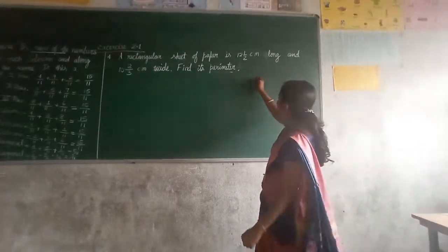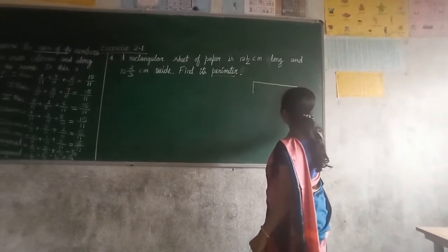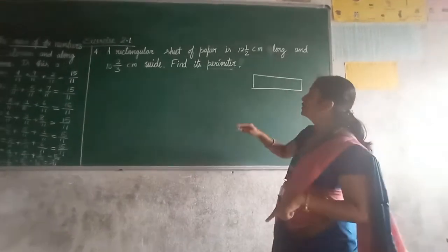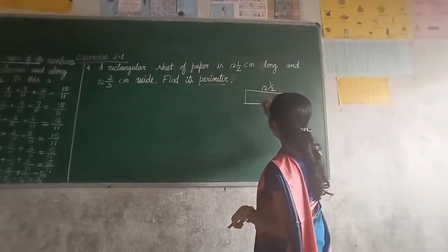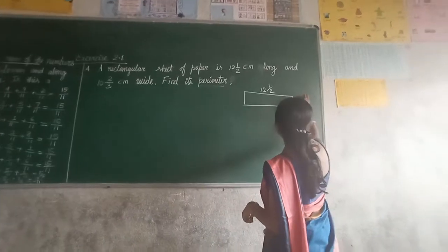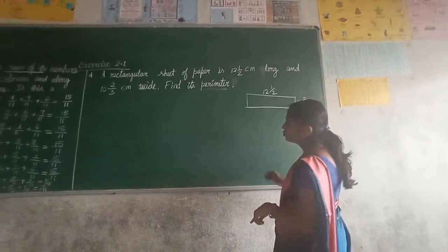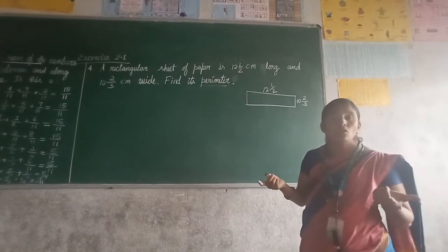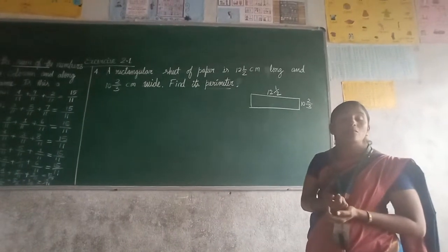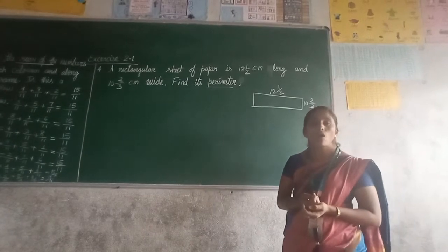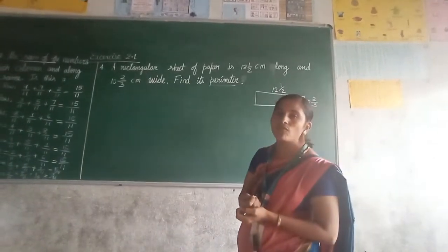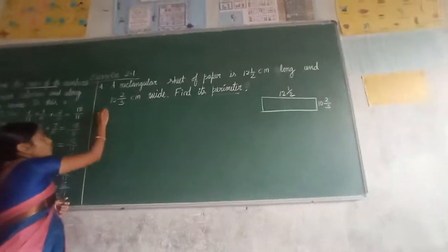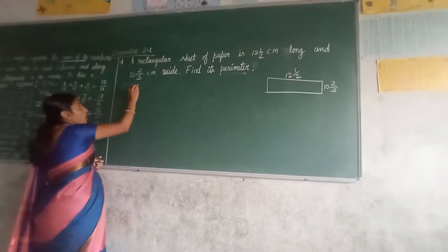Hope you know that the meaning of perimeter. They have told that rectangular sheet means the shape will be rectangular. One is 12 and half. Another is 10, 2 upon 3. But perimeter, what do you mean perimeter? Perimeter is equal to sum of all sides. Let us start to solve the problem. Solution.